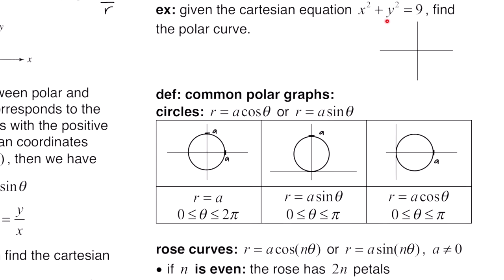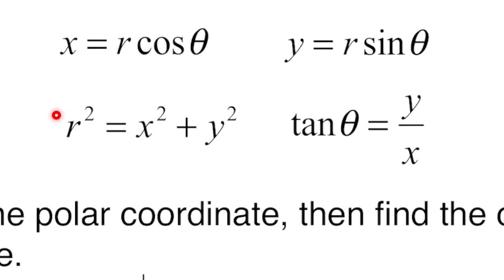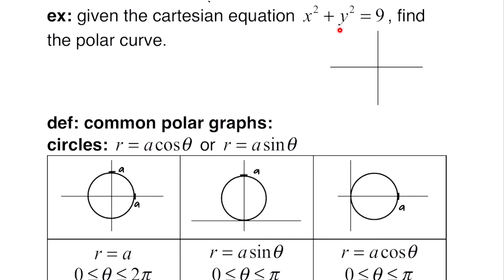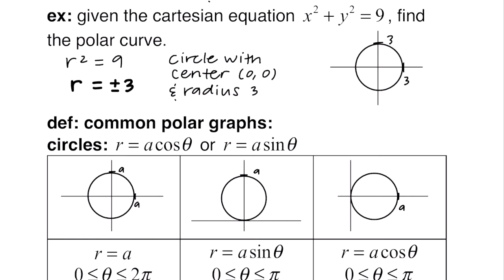This example: given the Cartesian equation x² + y² = 9, find the polar curve. We use r² = x² + y², replacing x² + y² with r², giving r² = 9, therefore r = ±3. Since there's no theta, no matter where you rotate, you always go out 3 units — by definition a circle with radius 3 and center (0, 0).